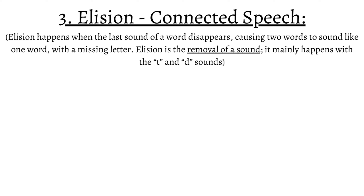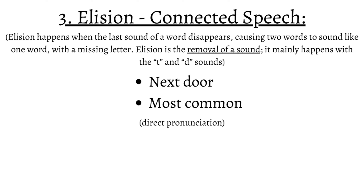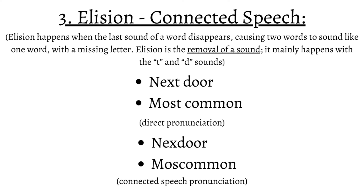Elision is the next concept, and it happens when the last sound of a word disappears. When that happens, two words will sound like one word with a missing letter. By definition, elision is the removal of a sound when speaking. In English connected speech, it mainly happens with the T and D sounds. Some examples are 'next door' and 'most common.' In connected speech, they will sound like one word with one removed sound: 'next door,' 'most common.'